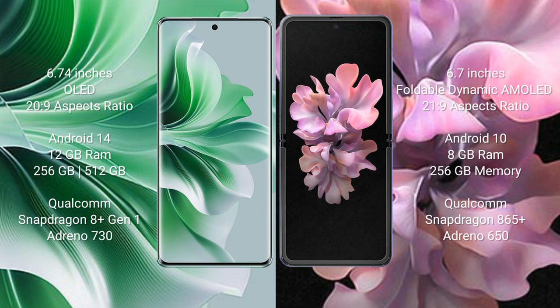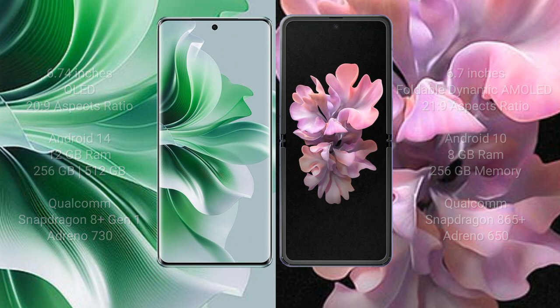Oppo Reno 11 Pro comes with 12GB RAM and 256GB or 512GB internal storage, Qualcomm Snapdragon processor and GPU Adreno 730. Samsung Galaxy Z Flip comes with 8GB RAM and 256GB internal storage, Qualcomm Snapdragon 865 Plus processor and GPU Adreno 650.